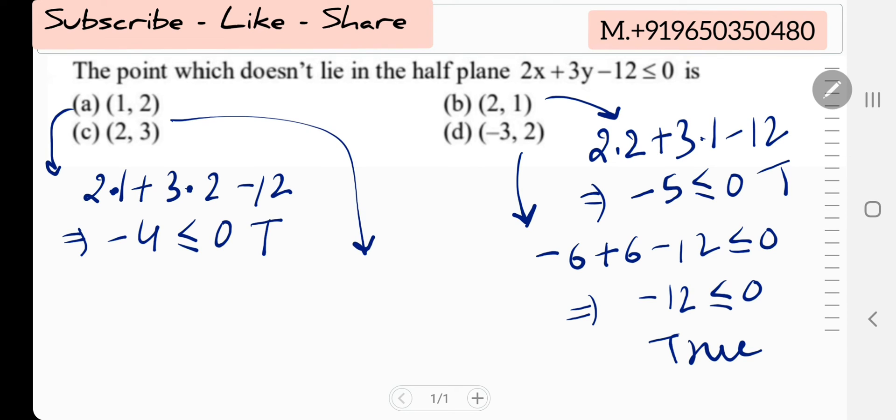Now option C is left, (2, 3): checking it, we get 2(2) + 3(3) - 12 = 4 + 9 - 12 = 1 ≤ 0, which is a false condition.